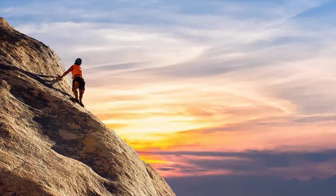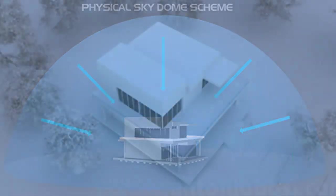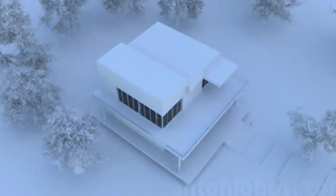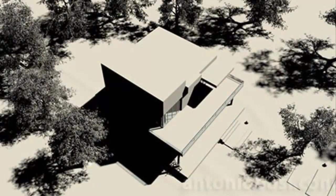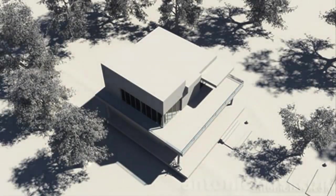Moving on to the indirect source of light — the sky — we will call it a fill light. The main reason the sky is called so lies in its nature itself. The sky, having a large cover, is like a large hemisphere illuminating each and every object below it. Since the illumination is spread equally and uniformly, it helps illuminate those shadow areas where the key light could not reach. So basically, it fills up all the shadows with its skylight.